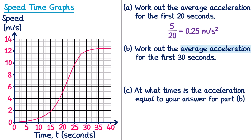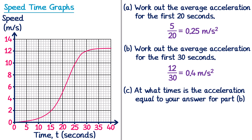Let's try another: average acceleration for the first 30 seconds. We connect the point on the curve at 0 seconds to the point at 30 seconds with a straight line. The change in y goes from 0 to 12, and the change in x goes from 0 to 30. So 12 ÷ 30 = 0.4 m/s². This highlights the difference between instantaneous acceleration (tangent at a point) and average acceleration (chord connecting two points).